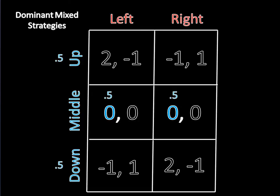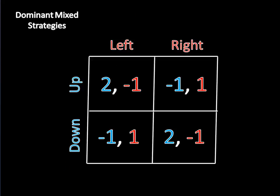Consequently, a rational player would never play middle, so we can remove it from our matrix. Which leaves us with just this. And we're very good at solving 2x2 matrices by now.